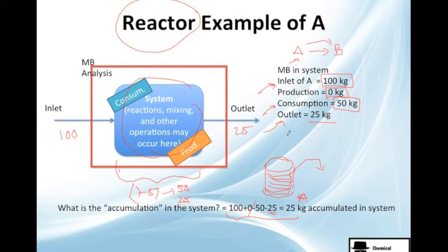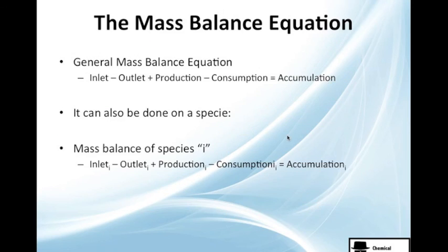So it's easy, you compare it with the city example. The reactor example is similar, just get to know what's the inlet, what's the production, what's the consumption, and what's the outlet. That's the actual problem, to know each and to do the math, because this is a very easy example. We're going to see more complicated problems.